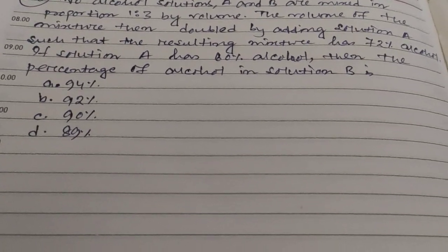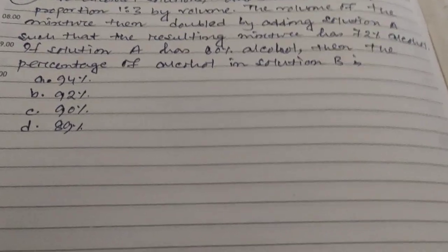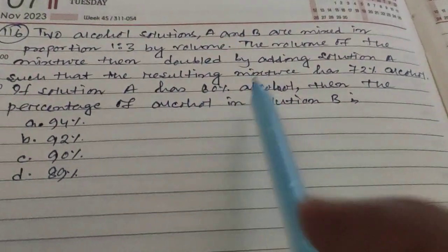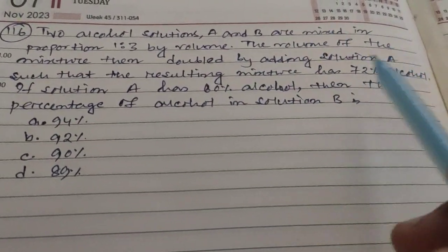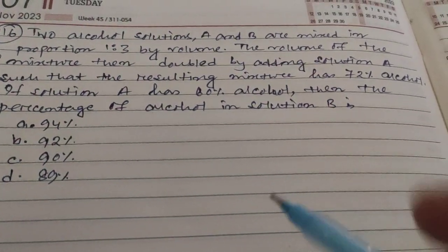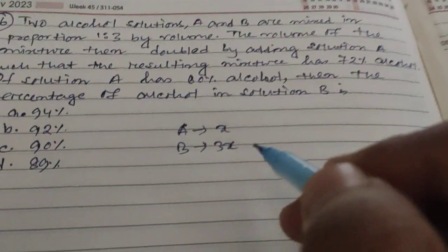Suppose the quantity of alcohol in A and B are x and 3x, as the ratio is 1 is to 3. So for A it's x, and for B it's 3x.